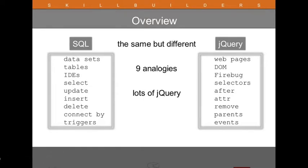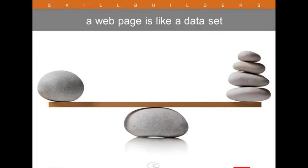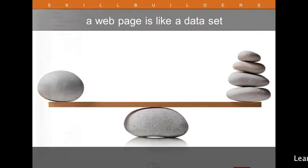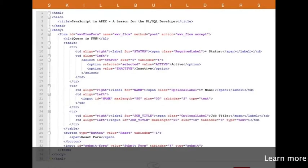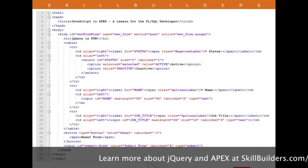critical concepts back to what you already know in the database. I think you'll be surprised at how similar these technologies can actually be. The first analogy: a web page is like a dataset. As database developers we're used to data — all kinds of it — but we rarely think of HTML web pages as just another dataset. We see something like this and we flip out, because the data doesn't look quite right.